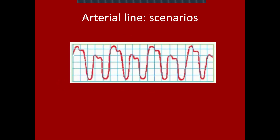The first case shows an arterial waveform where you can make out the dicrotic notch and diastolic portion. You can see this arterial waveform has a variable amplitude — going from large amplitude to a relatively smaller amplitude and back every other beat. This is not normal to see such regular variability in the arterial waveform.